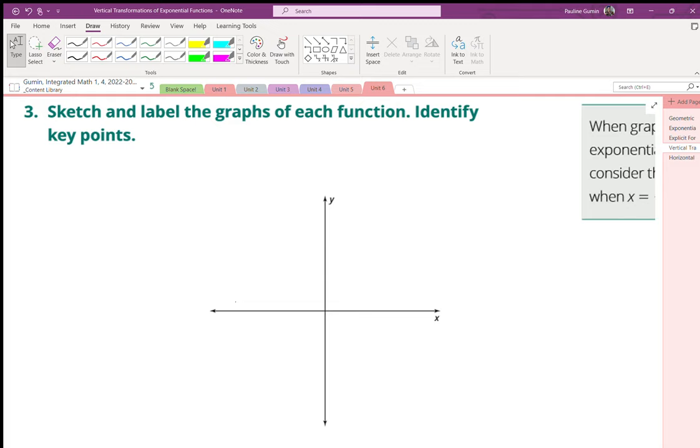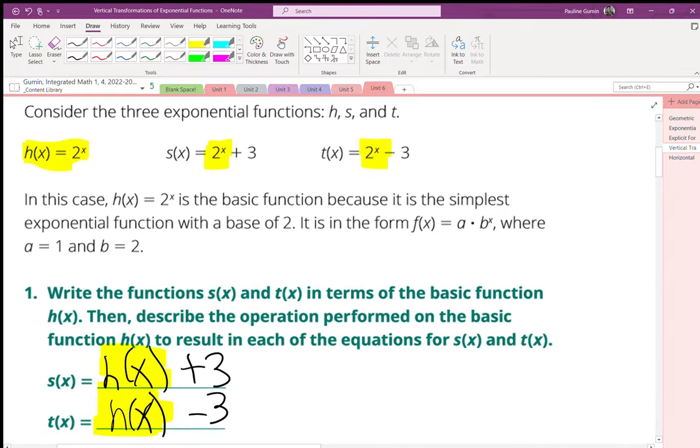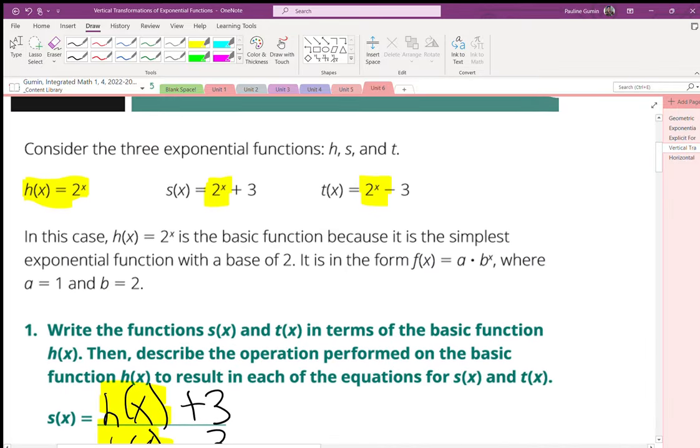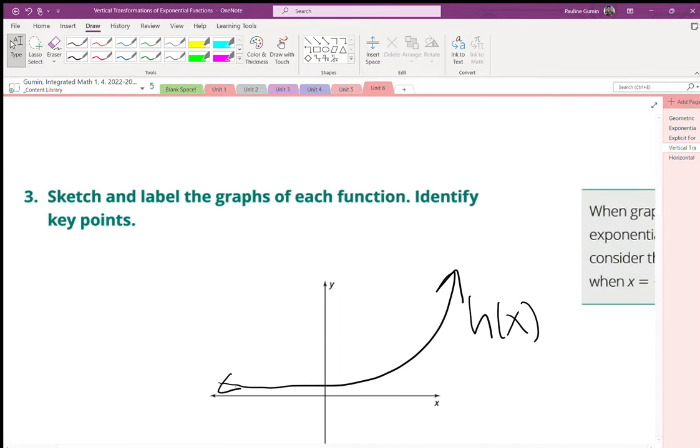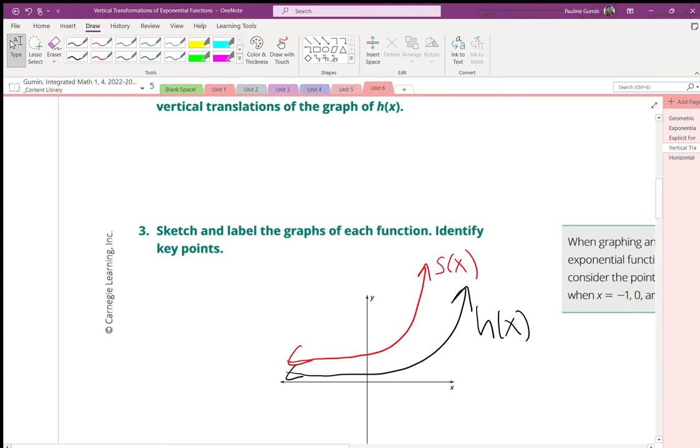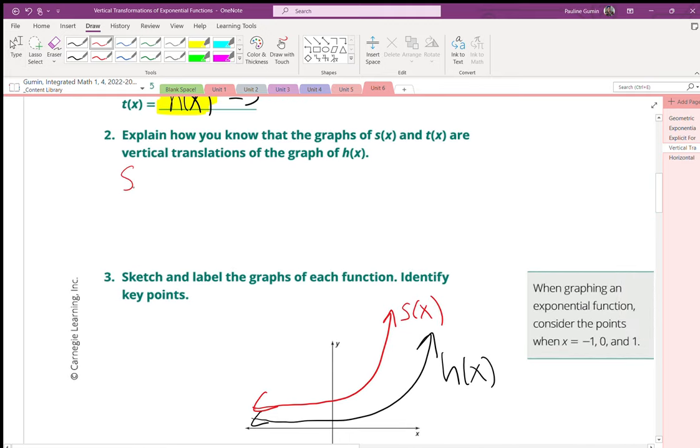First I had us graph h of x, and it looked something like this. Then I had you graph s of x, which was 2 to the power of x plus 3. When you graphed it, it ended up right here. And it looked like s of x was moved up. So s of x moved up from h of x.